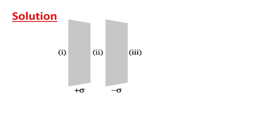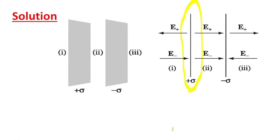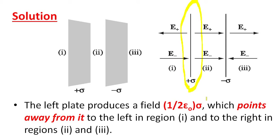Let us redraw the diagram. Considering the first plane alone and neglecting the second plane for now: the left plate produces a field of sigma over two epsilon zero, pointing away from the plane — to the left in region one, and to the right in regions two and three.